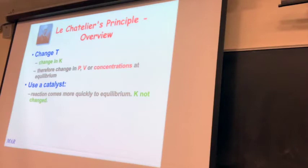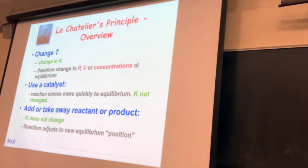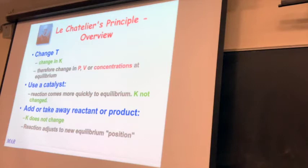Catalysts don't change K — they just make the reaction reach equilibrium faster. If you're an impatient chemist, catalysts can make the reaction go faster without actually changing K. Finally, and most commonly used: when you add or remove a reactant or product, the reaction shifts in the opposite direction of what you added. If you added a reactant, the reaction shifts to the product side. If you take away something, the reaction shifts toward the side you removed it from.